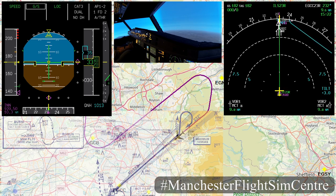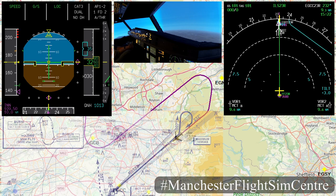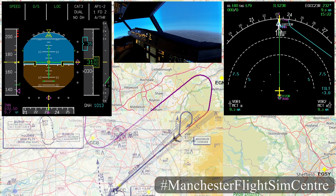We are now at flap 2, the gear is up, we're in managed speed so the magenta target speed is 139 knots. But as we are flap 2, the aircraft will not decelerate below F speed.